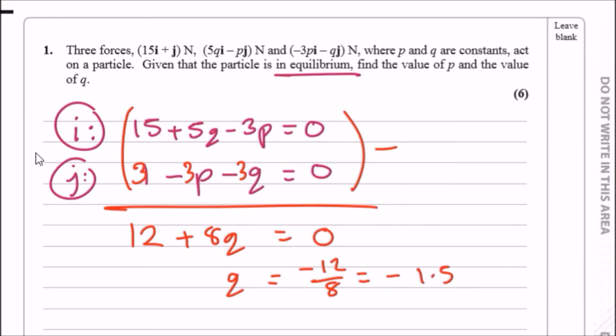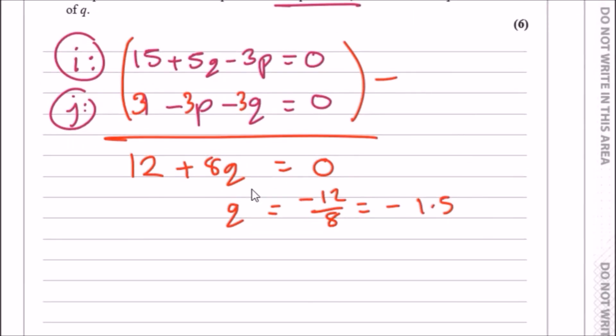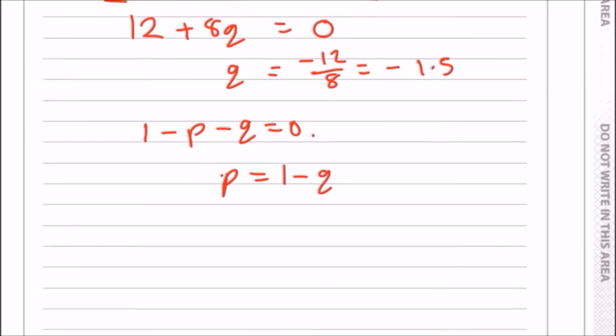And lastly, to find p, I would just go back and use the second equation. We initially had 1 - p - q = 0, so effectively p = 1 - q. So it'll be 1 - (-1.5), and you should get 2.5. So p = 2.5. That's it, all done.